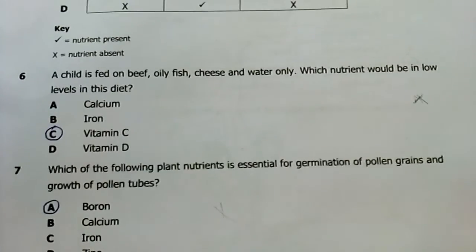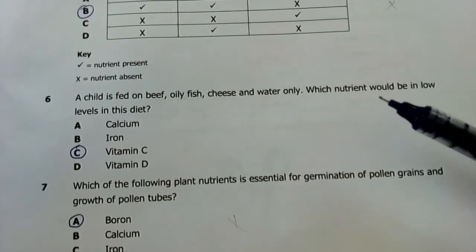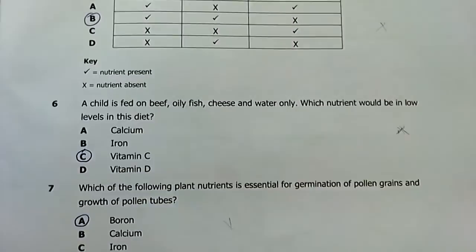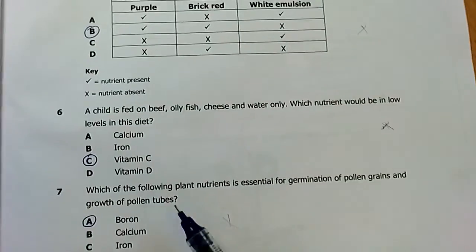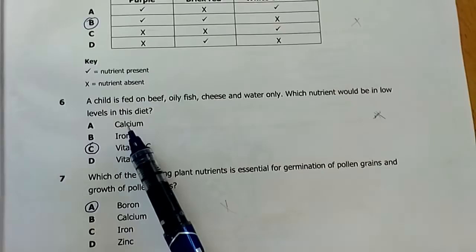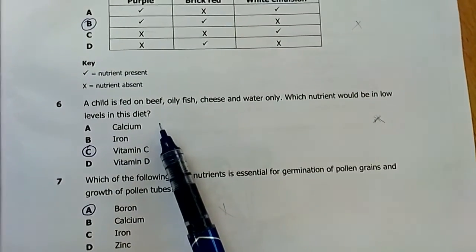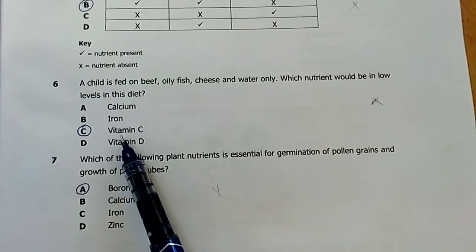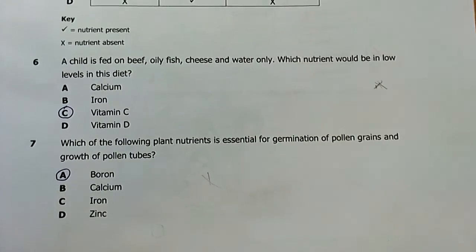Number six: a child is fed on beef, oily fish, cheese, and water. Which nutrient would be in lower levels in this diet? My answer is C, vitamin C is found mostly in greens and fruits. Calcium can be found in fish, beef, vitamin D can be found in beef, iron can be found in beef and cheese. So vitamin C is the one that is likely to be in low levels.